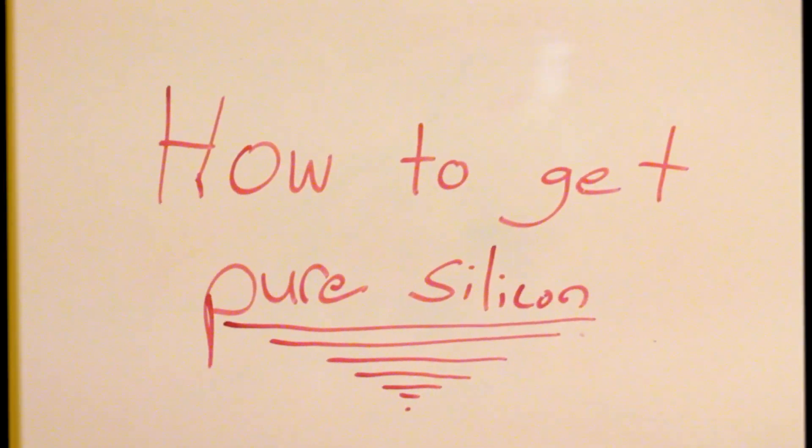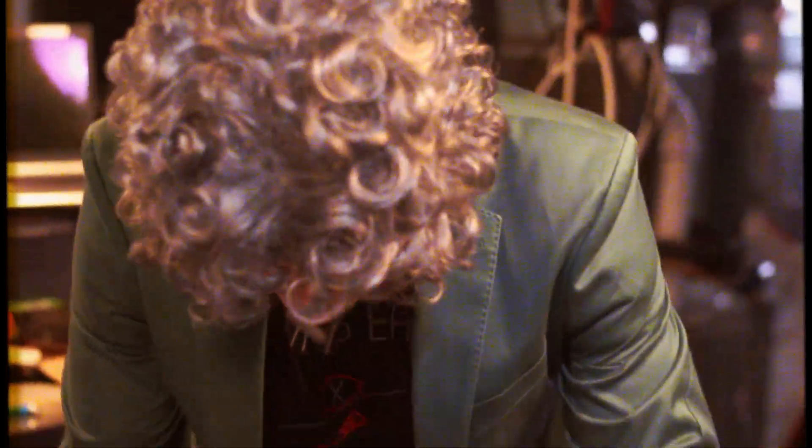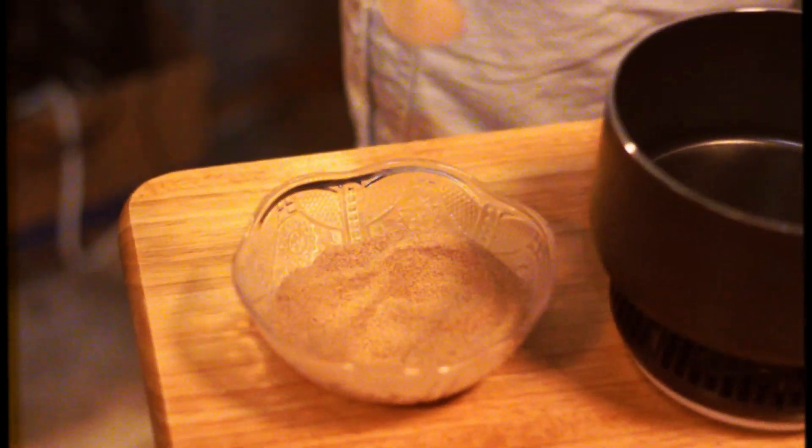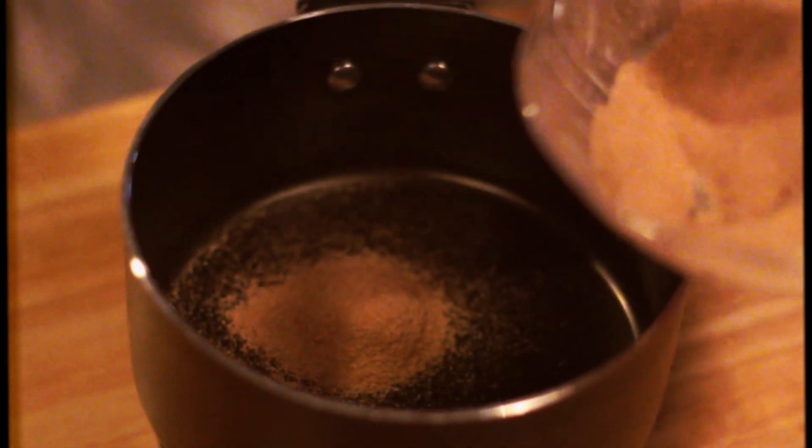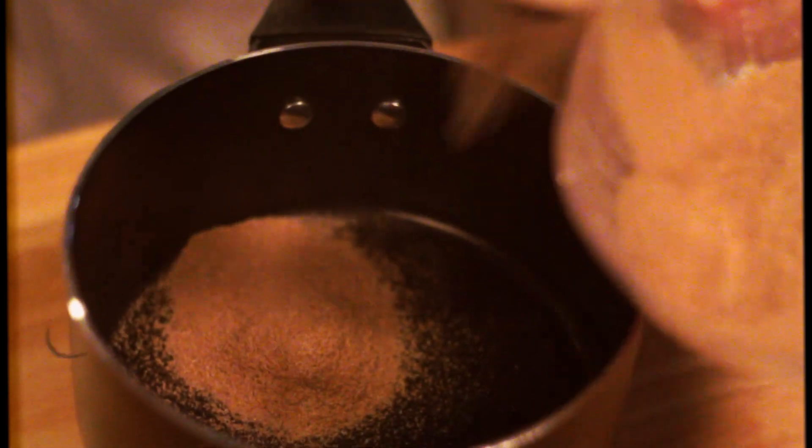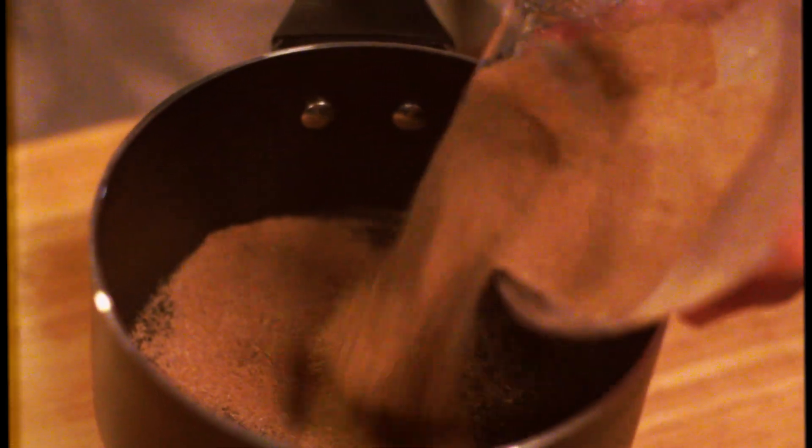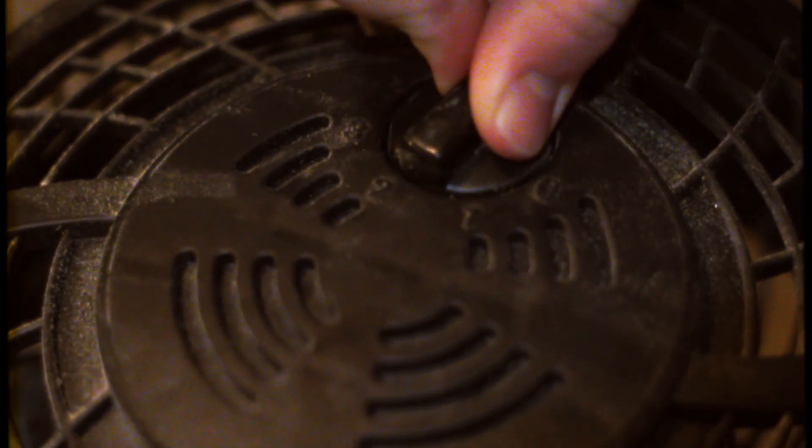Now I'm going to be showing you how to get pure silicon. What you want to do is get something like sand or a rock. Today I'm going to be using sand to show you how to do it. You want to take the sand and mix it with another chemical like boron and you want to get it really, really, really hot.